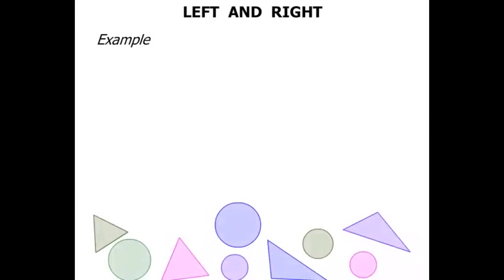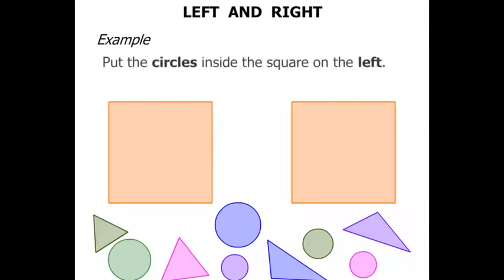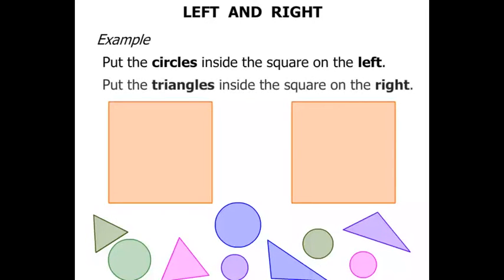Let's look at an example now. We've got a bunch of triangles and circles, and two squares. Put the circles inside the square on the left, and put the triangles inside the square on the right. Let's do the circles, moving into the left firstly.